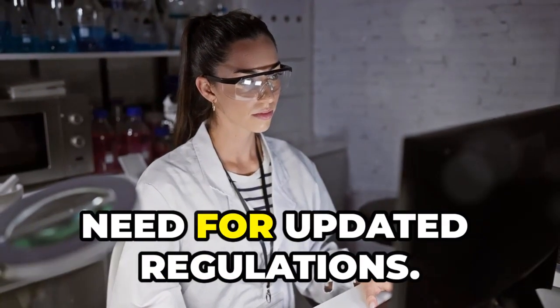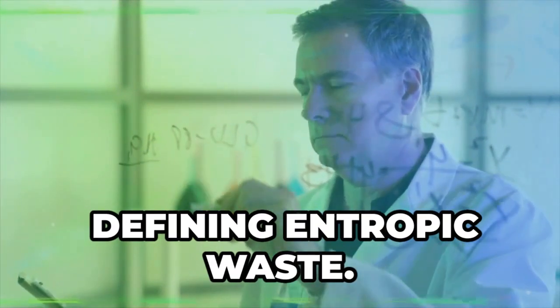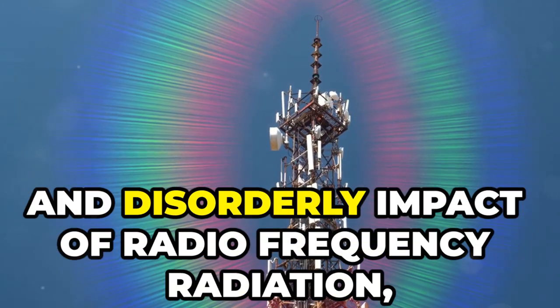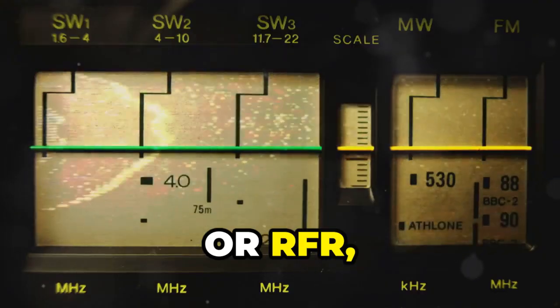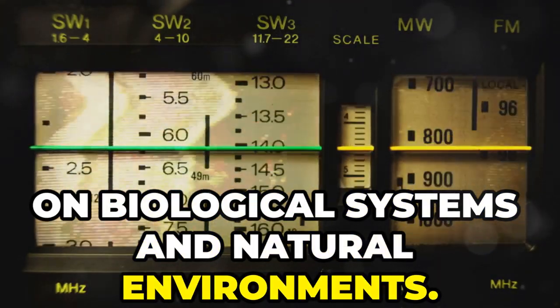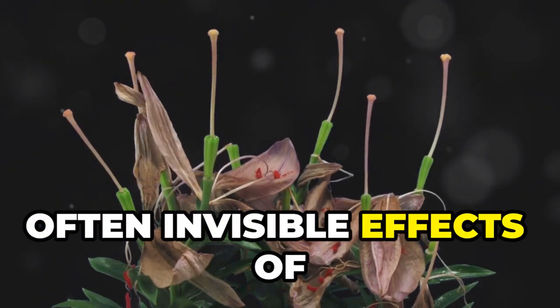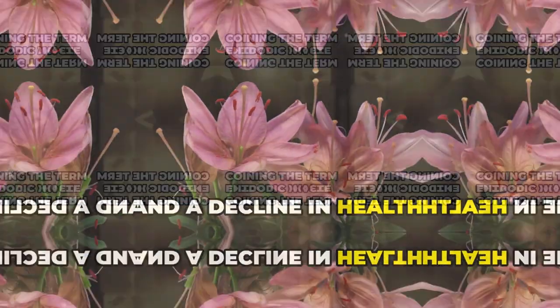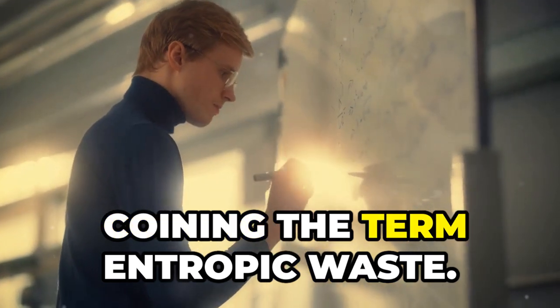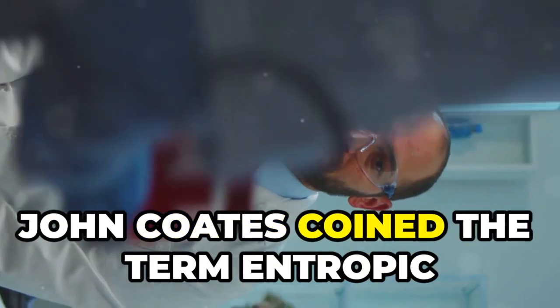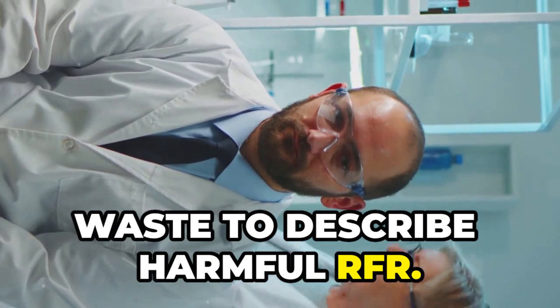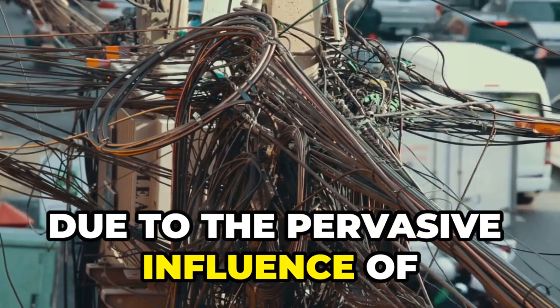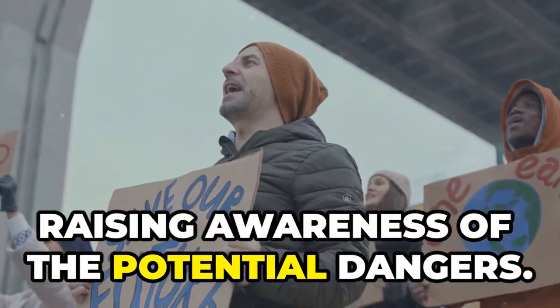The concept of entropic waste and the need for updated regulations. Defining entropic waste. Entropic waste refers to the disruptive and disorderly impact of radiofrequency radiation, or RFR, on biological systems and natural environments. It highlights the non-thermal, often invisible effects of electromagnetic fields that contribute to biological stress, environmental degradation, and a decline in health. Coining the term entropic waste. John Coates coined the term entropic waste to describe harmful RFR. This evocative term effectively conveys the concept of disorder in natural systems due to the pervasive influence of electromagnetic fields, raising awareness of the potential dangers.